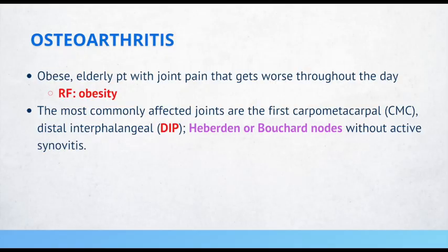Osteoarthritis. A major risk factor for this condition is obesity. Patients typically present with joint pain that gets worse throughout the day. The most commonly affected joints are the first carpometacarpal joints, as well as the distal interphalangeal joints. Patients may even have Heberden or Bouchard nodes without active synovitis.